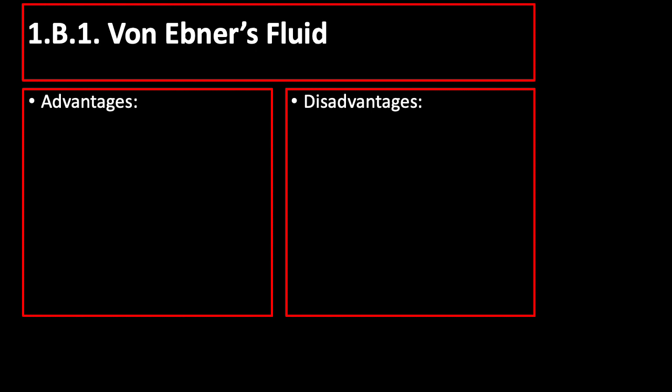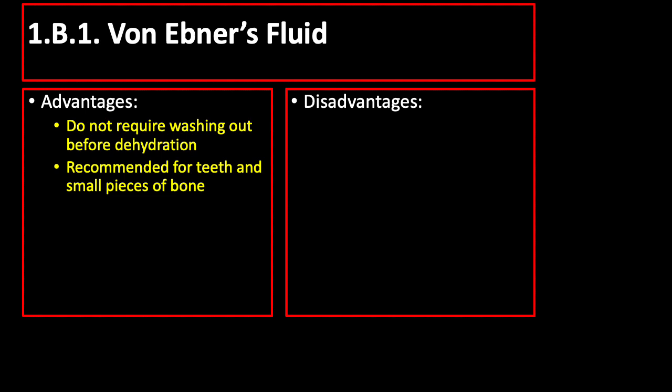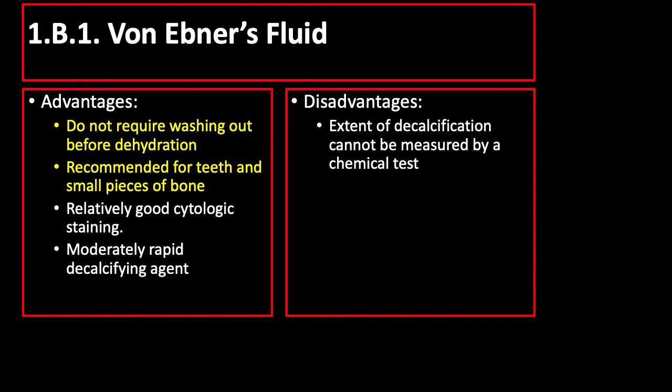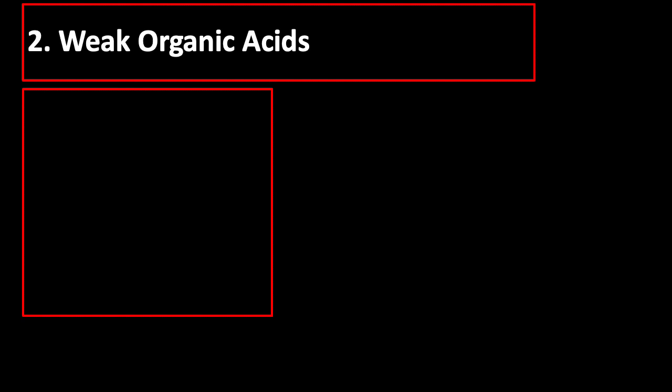An example of an acid decalcifying agent that contains hydrochloric acid is Von Ebner's fluid. Von Ebner's fluid has advantages such as not requiring washing out before dehydration and it is the recommended decalcifying agent for teeth and small pieces of bone. However, the extent of Von Ebner's fluid decalcification cannot be measured by chemical testing.